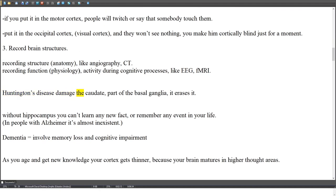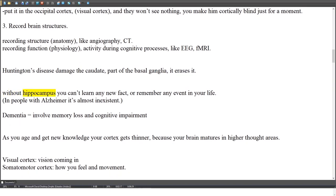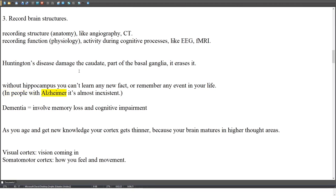Huntington's disease damages the caudate, part of the basal ganglia, essentially erasing it. Without the hippocampus, you can't learn any new fact or remember any event in your life. In people with Alzheimer's, the hippocampus is almost nonexistent.